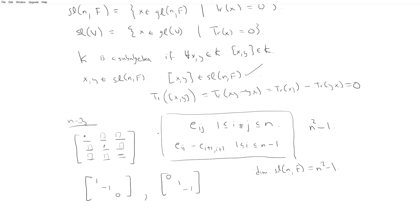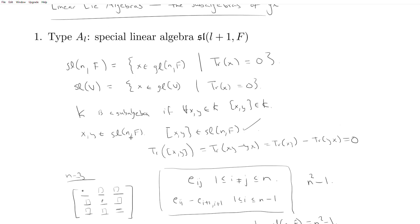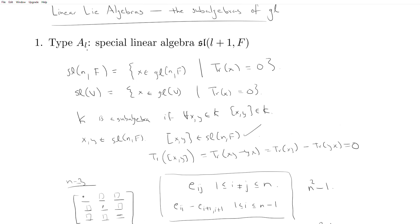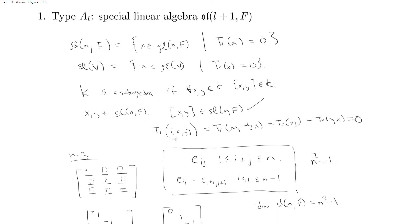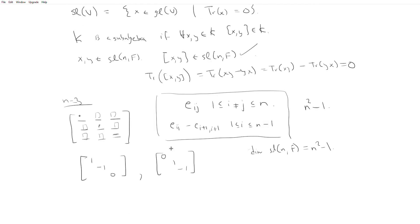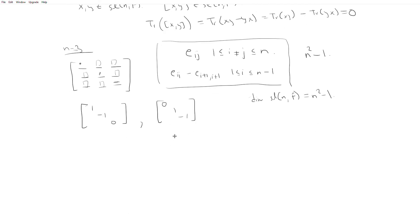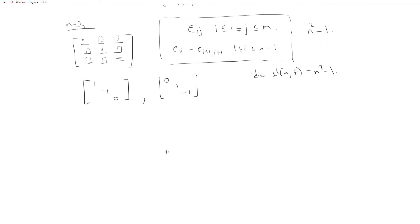The special linear algebra will play a crucial role in all things to come. One of the most important cases is the family A_1, which is sl(2, F) — when l equals one, that corresponds to sl(2, F). Let's take a closer look at sl(2, F).